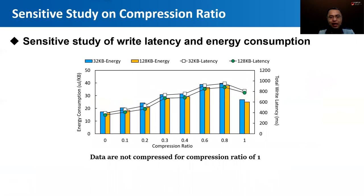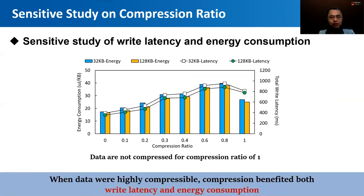We studied the effect of compression ratio on write latency and energy consumption. Although compression induced additional energy cost, FPC still achieved lower energy consumption when the compression ratio was good enough. The results suggest that when data are highly compressible, compression benefits both write latency and energy consumption.